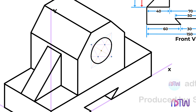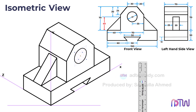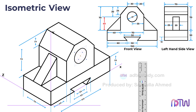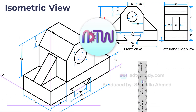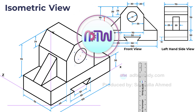By following these steps we successfully draw the circle in the isometric view of the object. Do the dimensioning of the figure. This is the final required figure. I hope this tutorial helped you understand how to construct the isometric view of an object from its orthographic projections.